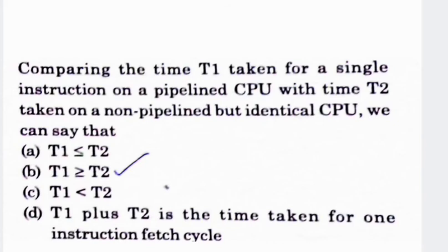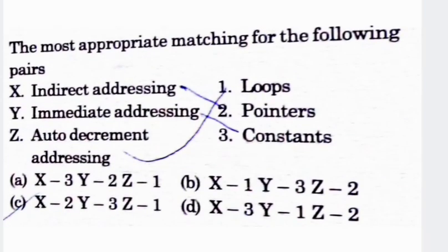Next question: comparing time T1 taken for a single instruction on a pipelined CPU with time T2 taken on a non-pipelined but otherwise identical CPU, we can say — option A: T1 ≤ T2, option B: T1 ≥ T2, option C: T1 < T2, option D: T1 + T2 is the time for one instruction fetch cycle. Option B is correct — the time for a single instruction on a pipelined CPU is greater than or equal to that on a non-pipelined CPU.